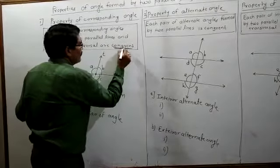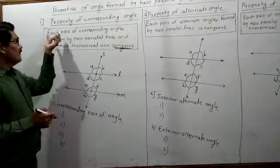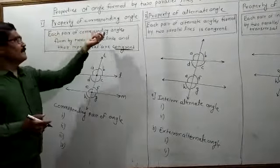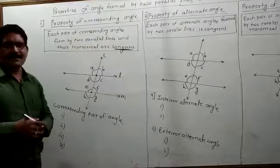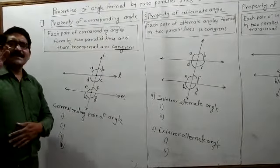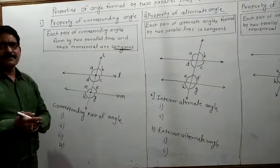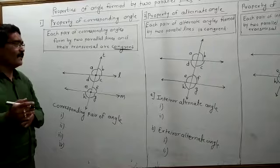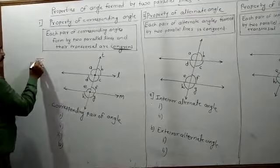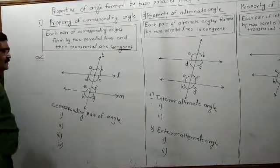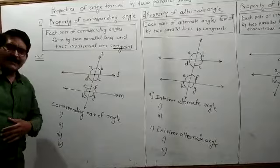What does congruent mean? Congruent means equal, congruent means same. So the property is: each pair of corresponding angles formed by two parallel lines and their transversal are congruent. You have to say that corresponding angles are congruent. This is the congruency sign — an equal-to sign with a horizontal line. The corresponding angles are congruent.